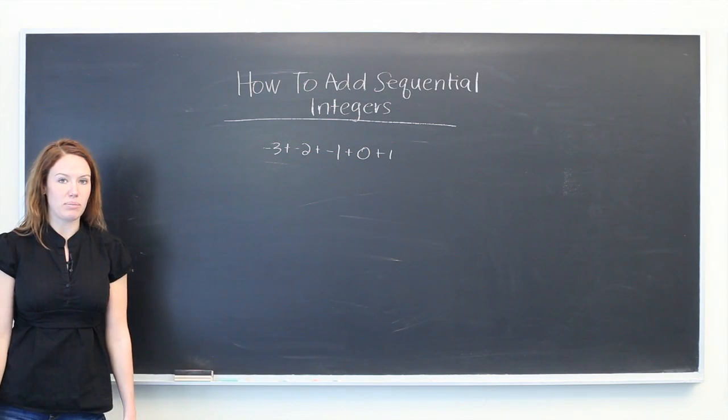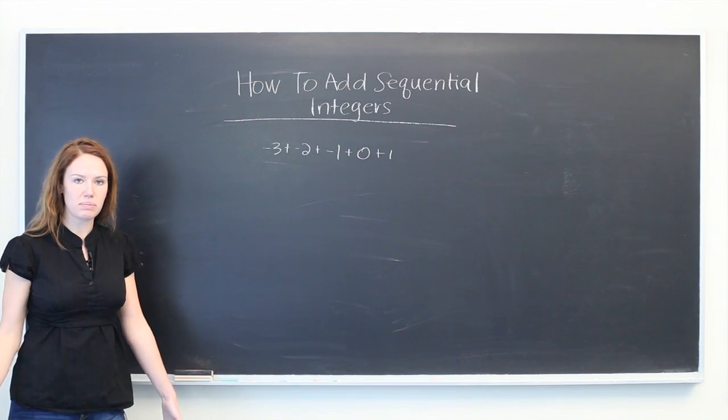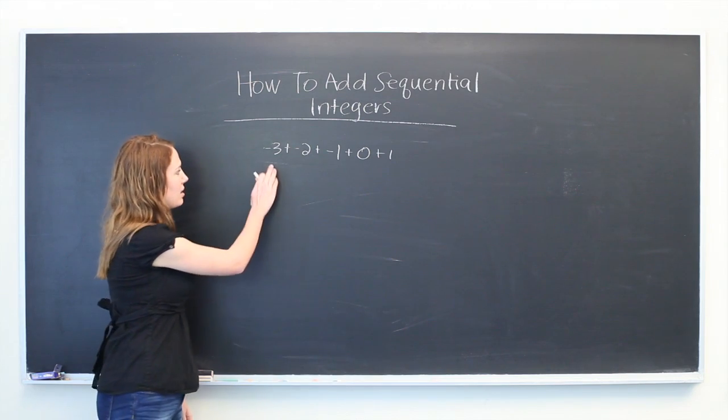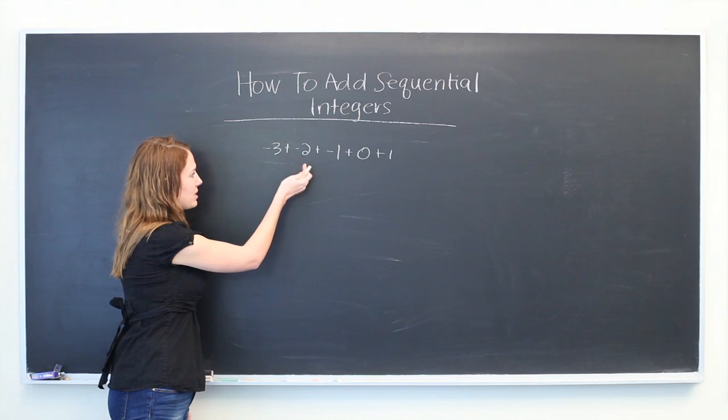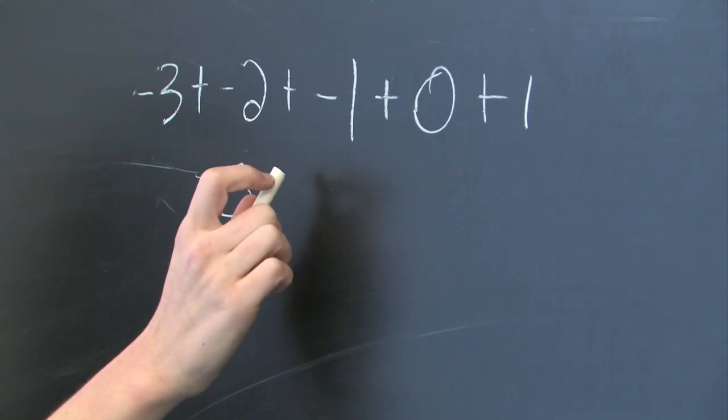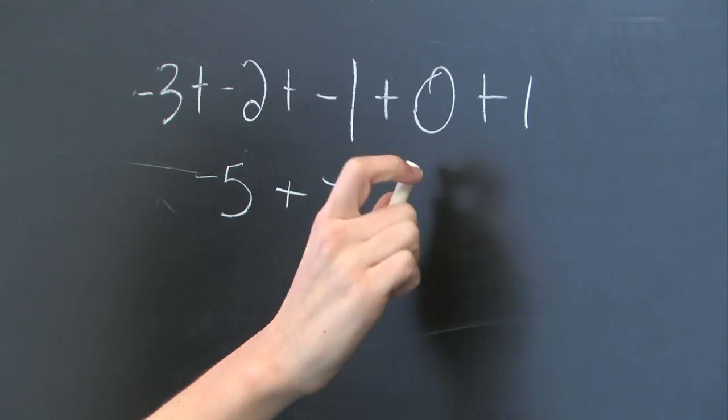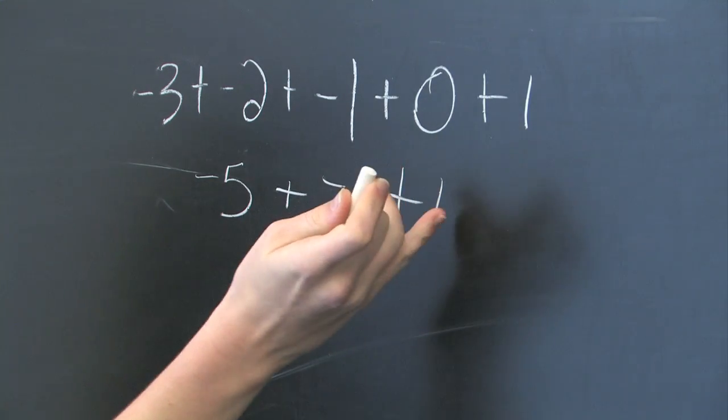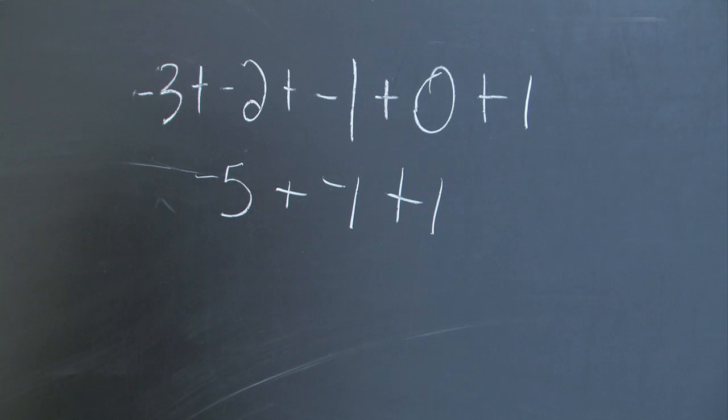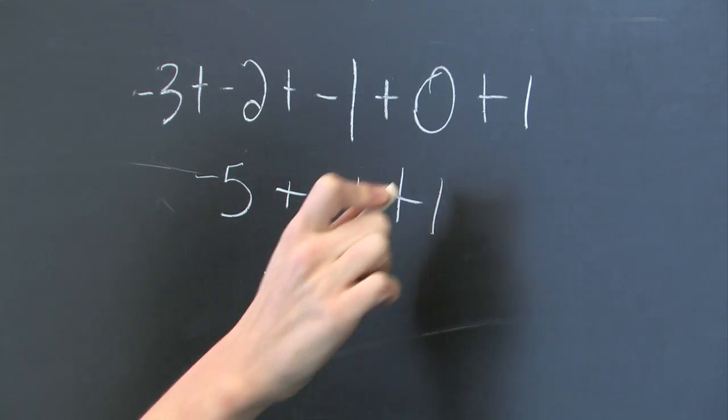So one way, if the numbers are low, is to just do this on paper. Just say -3 + -2 is -5, plus -1, plus 1. We know that -1 + 1 will cancel out and we'll be given the answer -5.